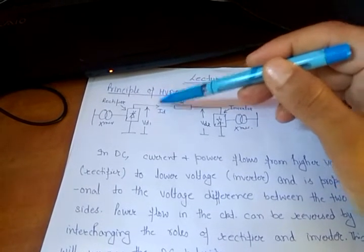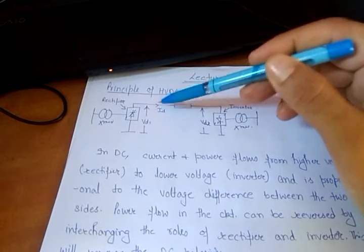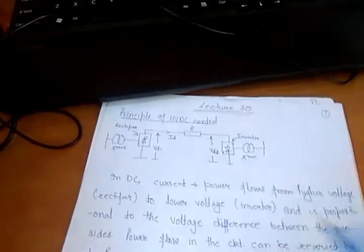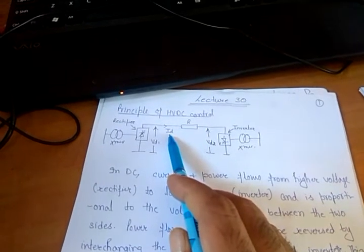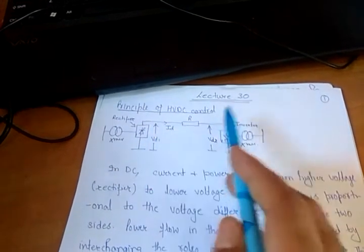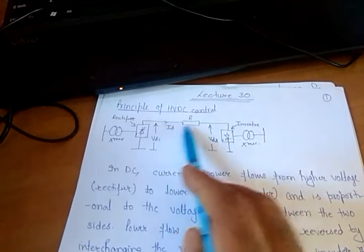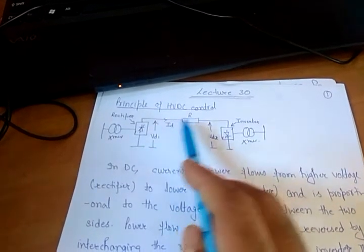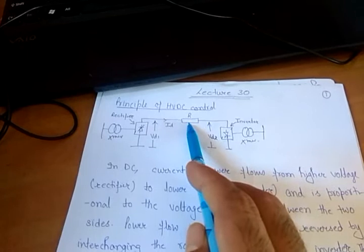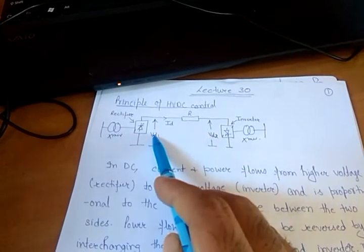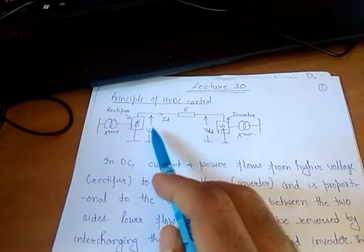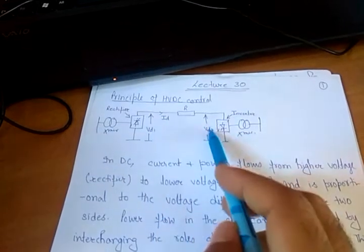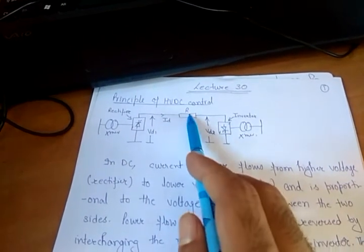The current is controlled by controlling the voltage, and this controlled current gives the desired power we want to transmit. The resistance of the line is R and ID is the current flowing. At one point voltage is Vd1 and at the other point voltage is Vd2. The current flowing is given by Vd1 minus Vd2 divided by R.